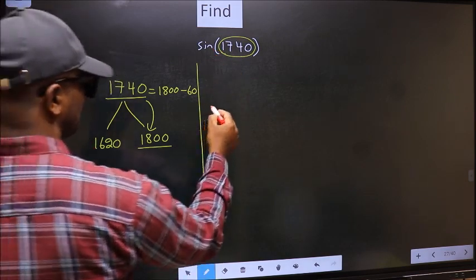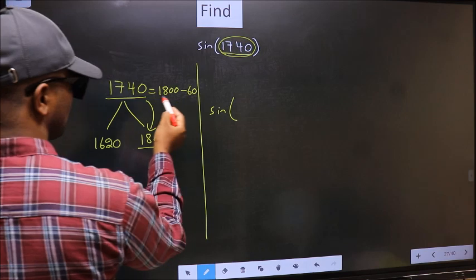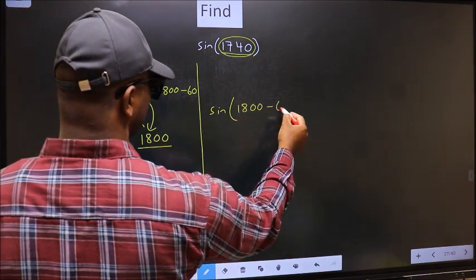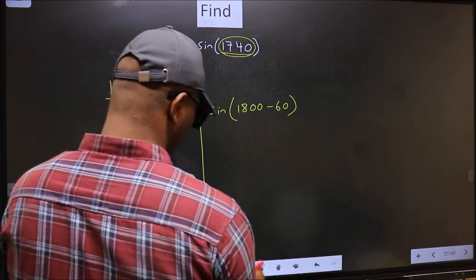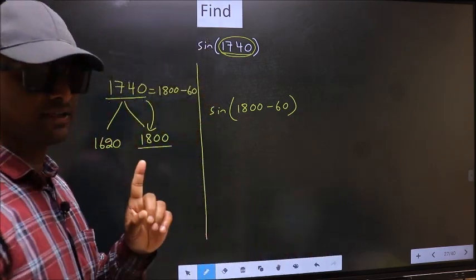So this will become sine. In place of this, we should write 1800 minus 60. This is your step 1.